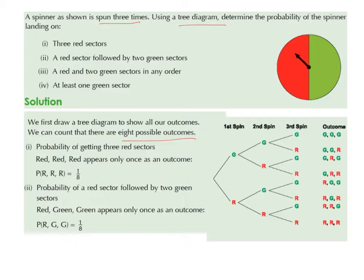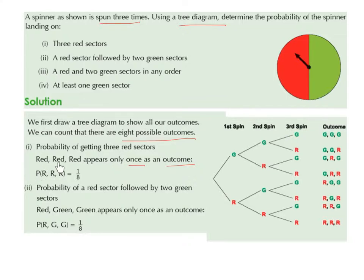Part 1: work out the probability that we land on 3 red sectors. The outcome RRR appears only once. Landing on red in the first spin, red in the second spin, and red in the third spin — there's only one outcome where that happens out of a total of 8 outcomes. So the probability of RRR is 1 over 8, because probability is what we want over the total.